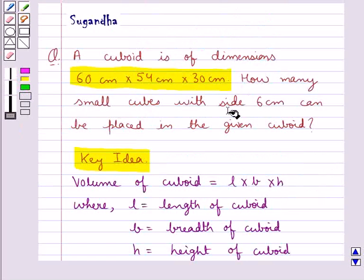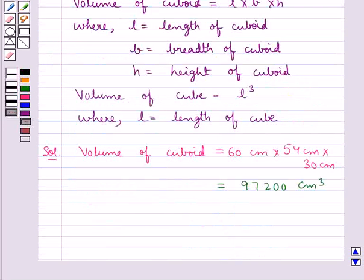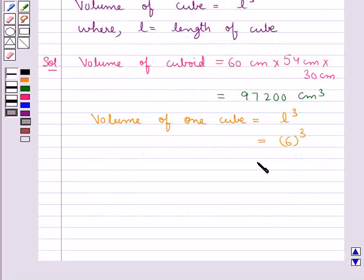The size of cube given to us is 6 cm. So the volume of one cube is equal to l³, where l is 6 cm, so 6³, which is equal to 216 cm³.